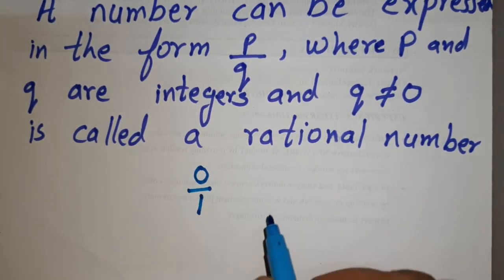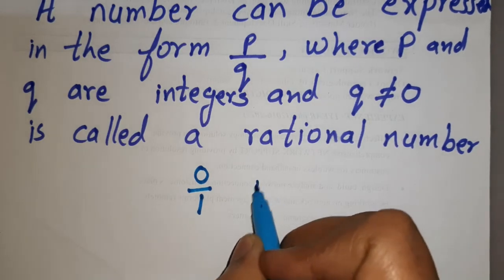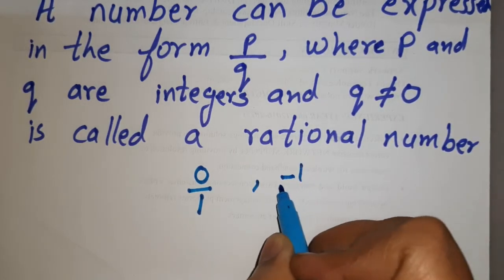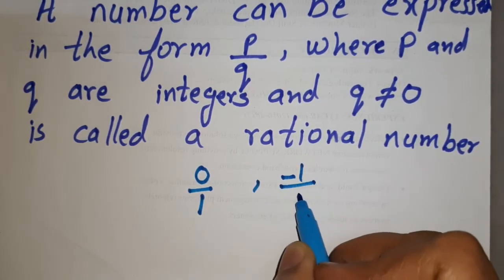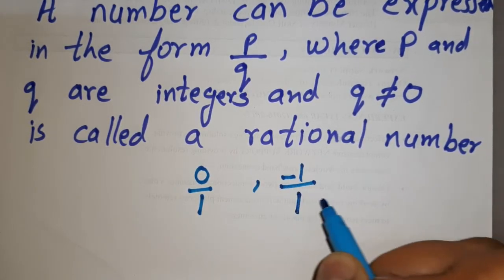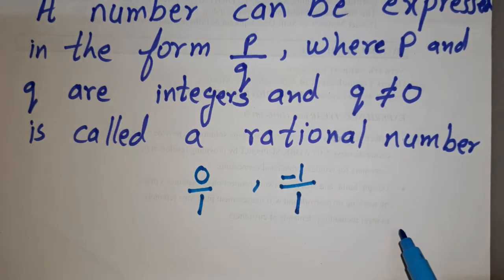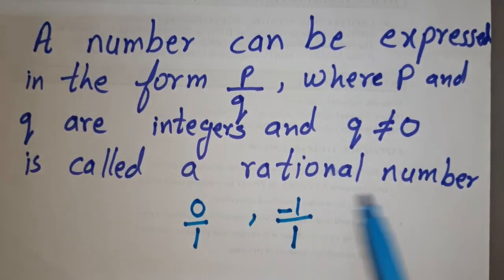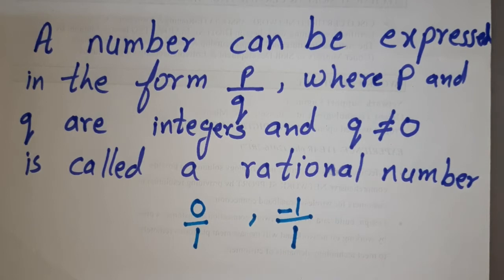The denominator cannot be zero. Minus one is a rational number because I can write minus one as minus one upon one. So all the integers can be expressed in the form of p by q. Therefore, all integers are rational numbers. Rational numbers can be either positive or negative.